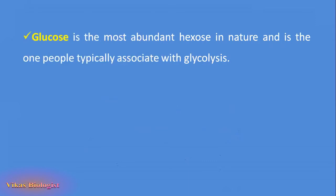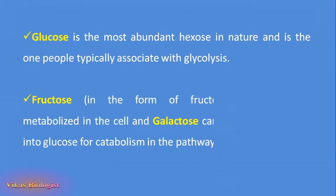Glucose is the most abundant hexose in nature and is the one typically associated with glycolysis. Fructose is metabolized in the cell and galactose can easily be converted into glucose for catabolism in the pathway as well.